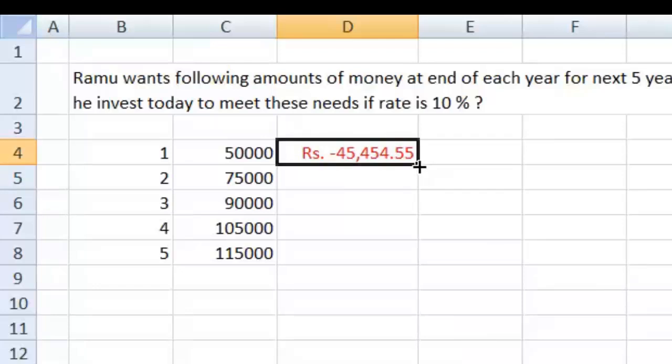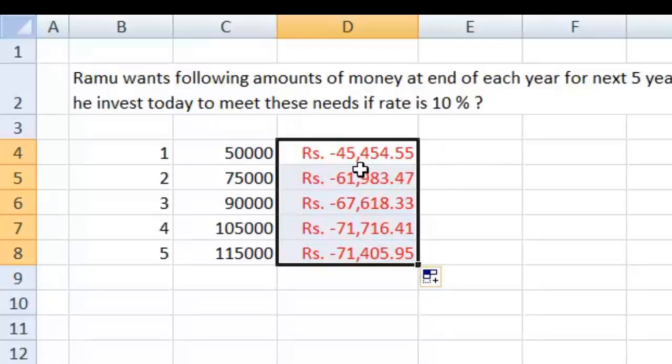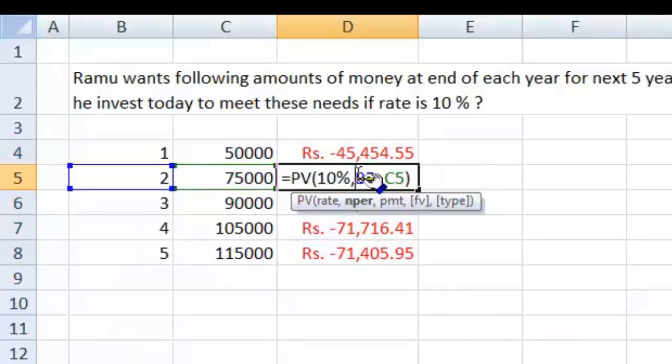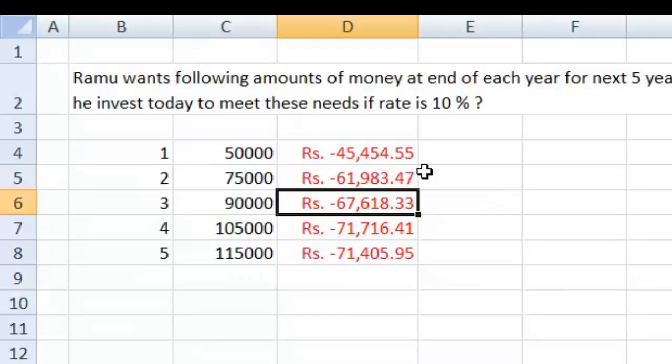So 45,454 rupees is required which can become 50,000 in the next one year. Now when we drag it, we will have resultant figures for all the amounts. For example, if you see here, the nper is being taken from B5. So I need future value after 2 years with an amount of 75,000.